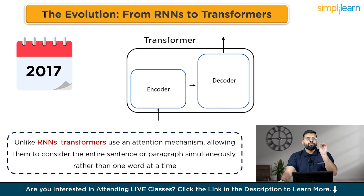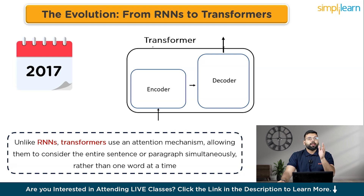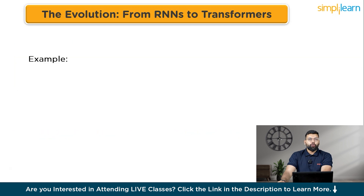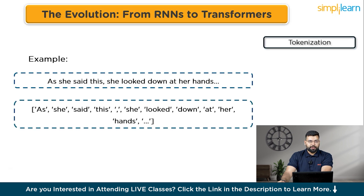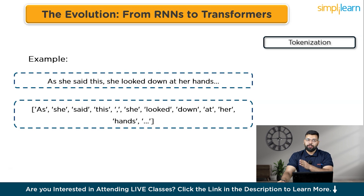Transformers first organize text into words or subwords — these tokens are then encoded into numerical representations and converted into embeddings which capture their meanings. The encoder pre-processes these embeddings to create a context vector representing the entire input. For example, with the sentence 'As she said this, she looked down at her hands,' we first perform tokenization — breaking the sentence into smaller pieces called tokens. Each token is then converted into a numerical representation, giving each word a unique number.